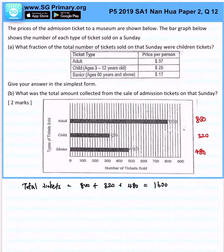Fraction of the tickets are children, very simple. It will be 320 over 1600, and that will give us, after simplifying...